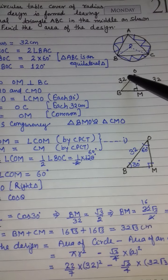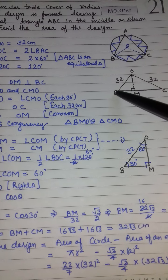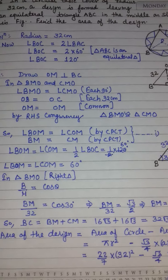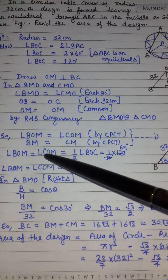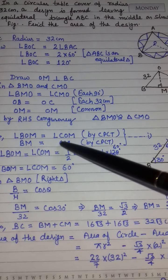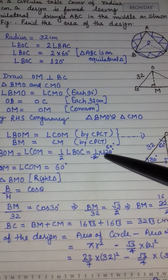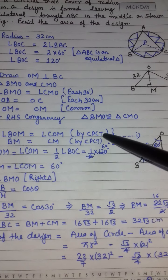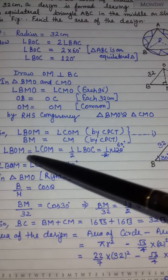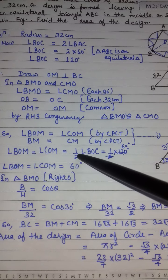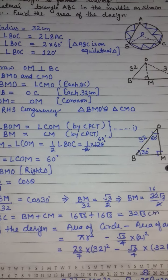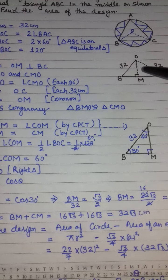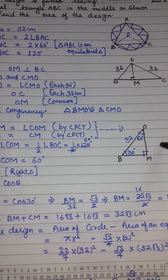By CPCT, BM = CM। तो angle BOM = angle COM = ½ × angle BOC = ½ × 120° = 60°। Angle BOM और angle COM दोनों 60° आ जाएंगे। अब हम right angle triangle BMO में trigonometry ratios से BM find करेंगे।